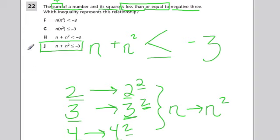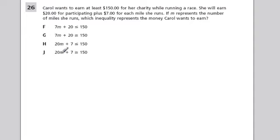In this problem we have Carol who wants to earn at least $150 for her charity while running a race. She will earn $20 for participating plus $7 for each mile she runs. So she's going to get $20 for participating in the run, and then you're going to add $7 for every mile, and a nice fast way to represent that is just $7 times the number of miles. So if she had ran one mile she would have 7 times 1 dollars, if she had ran two miles it would be 7 times the 2 miles, $14. We're using m because they asked us to use m, and that makes sense.